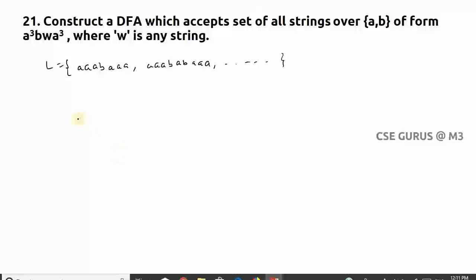How to solve this one? Initially q0, I must get initially three a's. There should not be any b here, so I need to get a here, second symbol again a, third symbol again a.